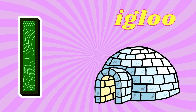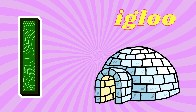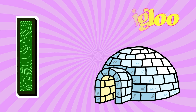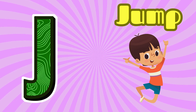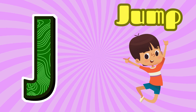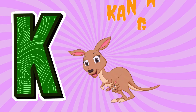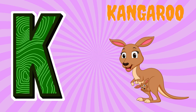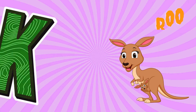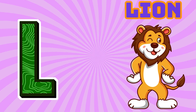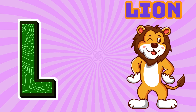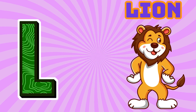I is for Igloo, I-I-Igloo. J is for Jump, J-J-Jump. K is for Kangaroo, K-K-Kangaroo. L is for Lion, L-L-Lion.